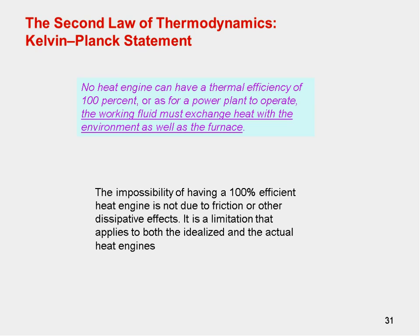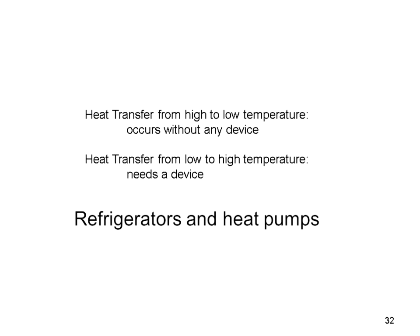The Kelvin-Planck statement, part of the second law of thermodynamics, says that no heat engine can have a thermal efficiency of 100%. The working fluid must exchange heat with the environment as well as the furnace. This impossibility is due to friction and other dissipative effects within the machinery — it applies to both idealized and actual heat engines. We'll see how the thermal efficiency of actual heat engines differs from that of an idealized heat engine.